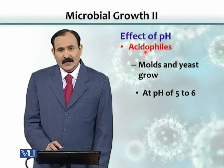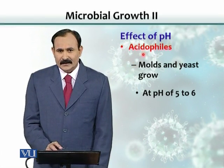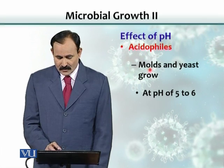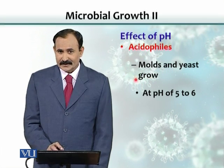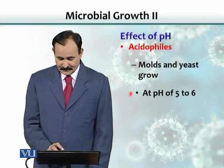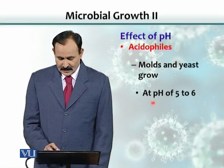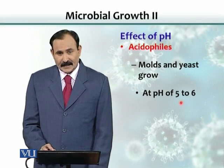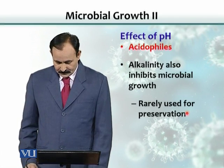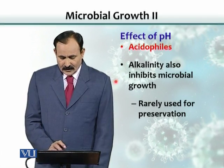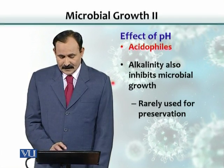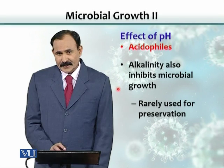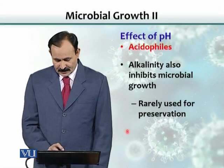What we call acidophiles are organisms that like acidic pH. Molds and yeast like to grow under acidic conditions, and their optimum pH requirement is 5 to 6. Alkalinity can also inhibit microbial growth, but it is very rarely used as a food preservation technique.